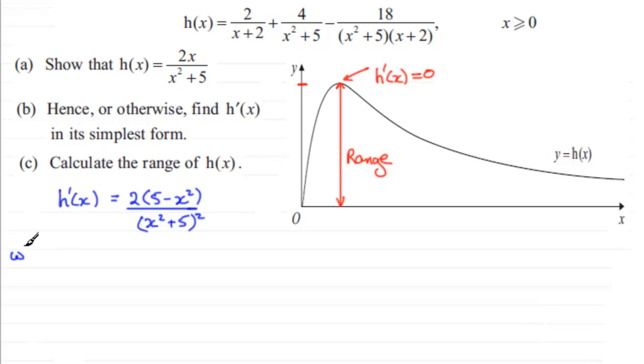And so at this point we're essentially looking for the value of x first of all when h'(x) equals zero. And when h'(x) equals zero, we've got our fraction 2 multiplied by 5 minus x squared over x squared plus 5 all squared has to equal zero.